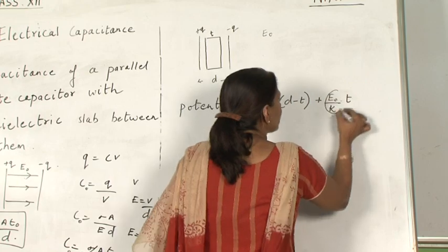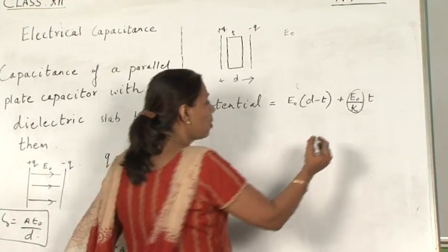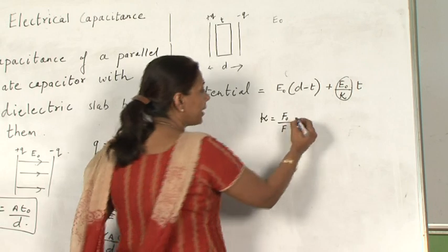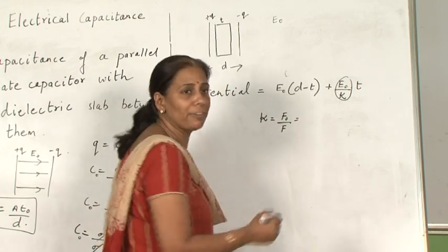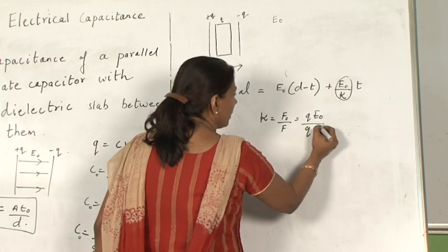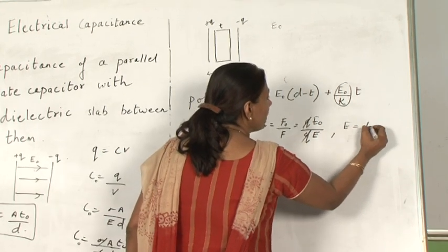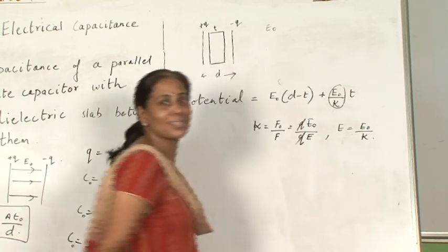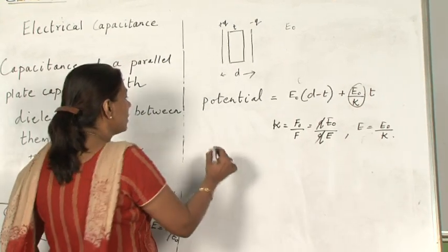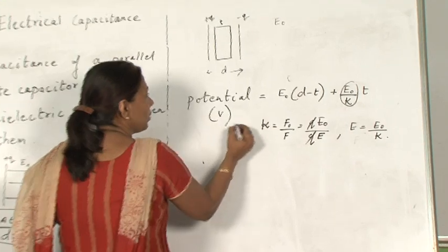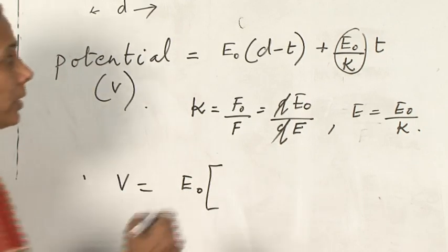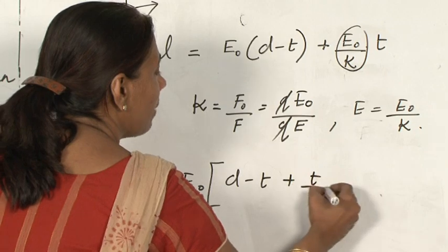Now you may think how this E naught has come. If you go back to Coulomb's law from the very first chapter, we defined K as F naught by F, and F naught in terms of electric field is Q E naught by Q E. So the electric field E in the presence of a dielectric will be E naught by K. We can take E naught common, so V equals E naught into D minus T plus T by K.